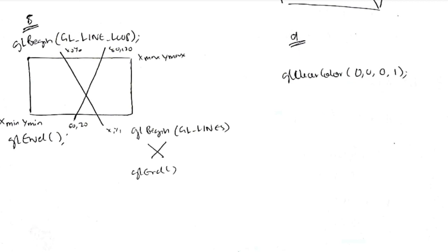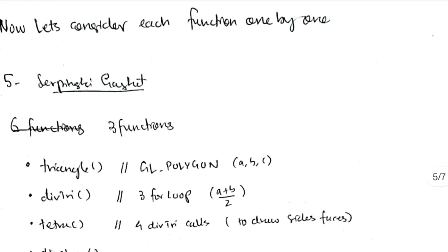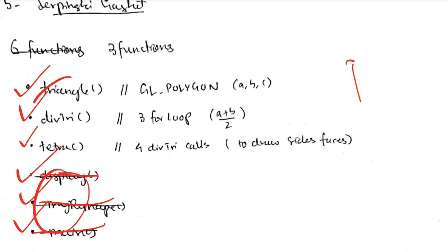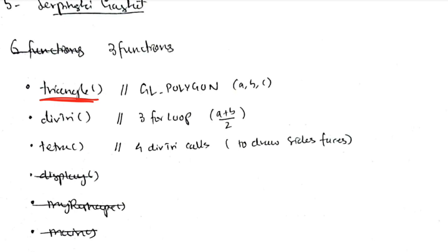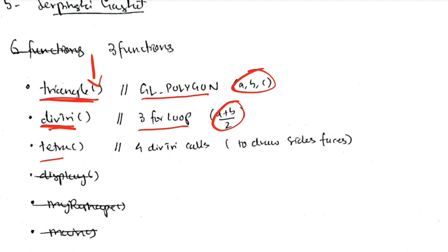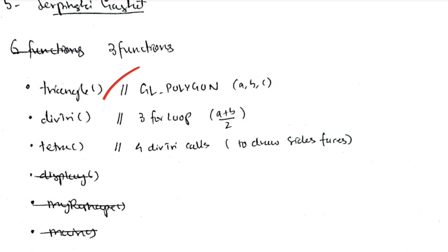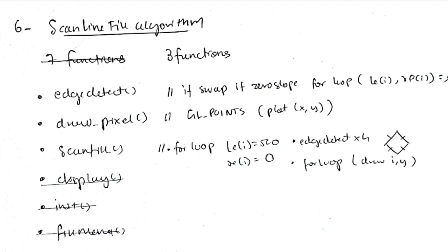Now let's go through each program individually. For program 5 (Sierpinski Gasket), there are 6 functions: triangle, div_try, tetra, display, my_reshape, and main. The last three are already covered, so we only need to learn triangle, div_try, and tetra. In the triangle function, three arguments are passed and a polygon is made using three vertex values a, b, c. In div_try, there are three calculations: (a+b)/2, (b+c)/2, and (a+c)/2. In tetra, four div_try calls are made for the four faces of the tetrahedron.